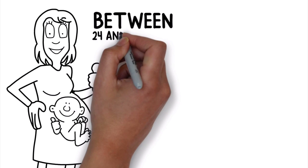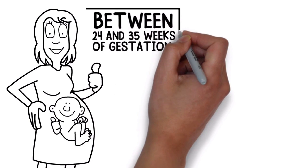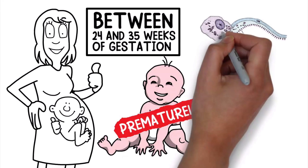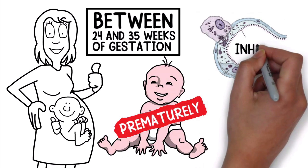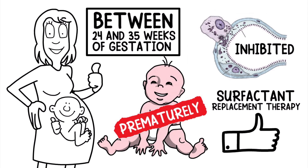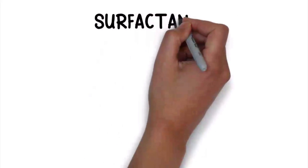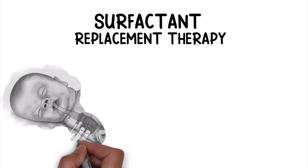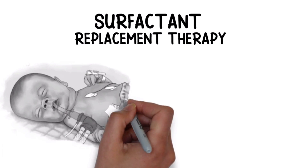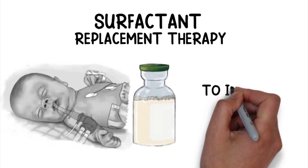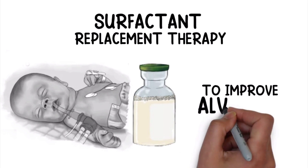The production of surfactant begins to develop between 24 and 35 weeks of gestation. So if an infant is born prematurely, the production of surfactant may have been inhibited, which is when surfactant replacement therapy would be indicated. Surfactant replacement therapy is a treatment modality often used in preterm infants with surfactant deficiency that involves the deliverance of exogenous surfactant in order to improve alveolar expansion.